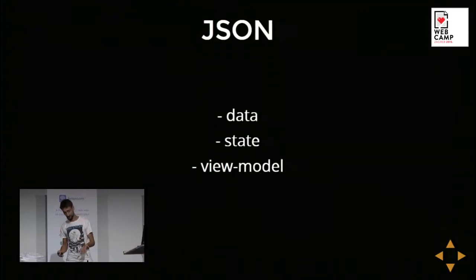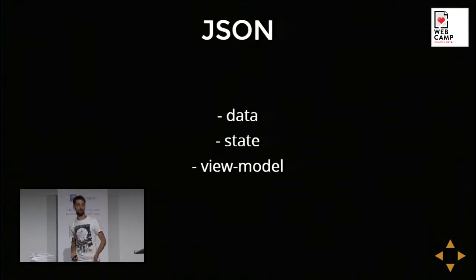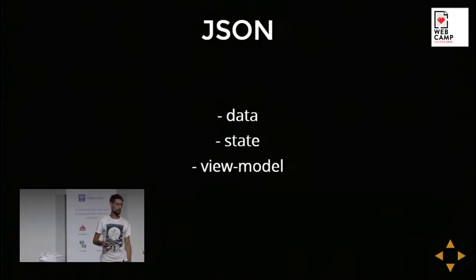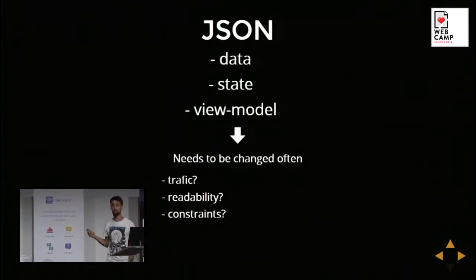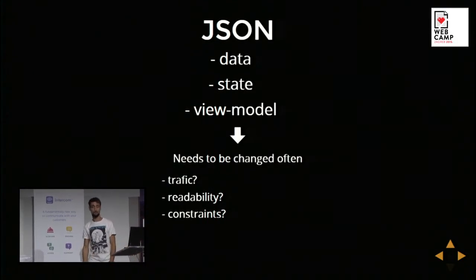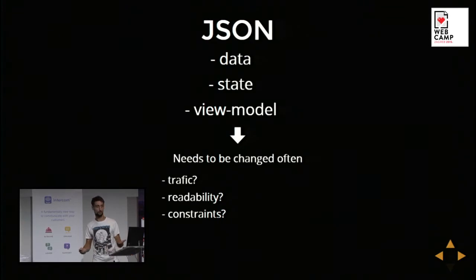Thanks to all those advantages, JSON has become a standard as a data format, or a way to express the state or view model of an application. But being as such, it requires changes quite often — so we need to think about traffic, readability, and constraints on all those levels.